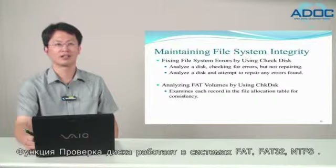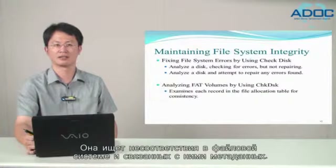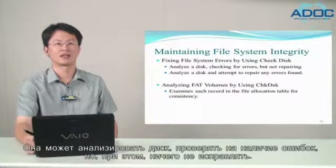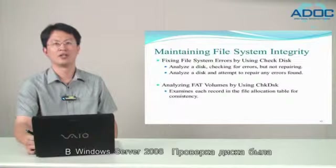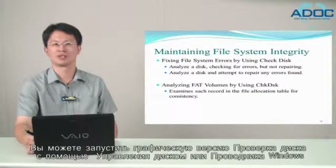Using Check Disk, you can check for and correct any of the common disk errors discussed previously. Check Disk works on FAT, FAT32, and NTFS volumes and primarily looks for inconsistencies in the file system and its related metadata. Check Disk has two modes: it can analyze a disk checking for errors but not repairing them, or it can analyze a disk and attempt to repair any errors found. New for Windows Server 2008 is that Check Disk has been optimized so that it runs faster than previous versions. You can run the graphical version of Check Disk using either Windows Explorer or Disk Manager.